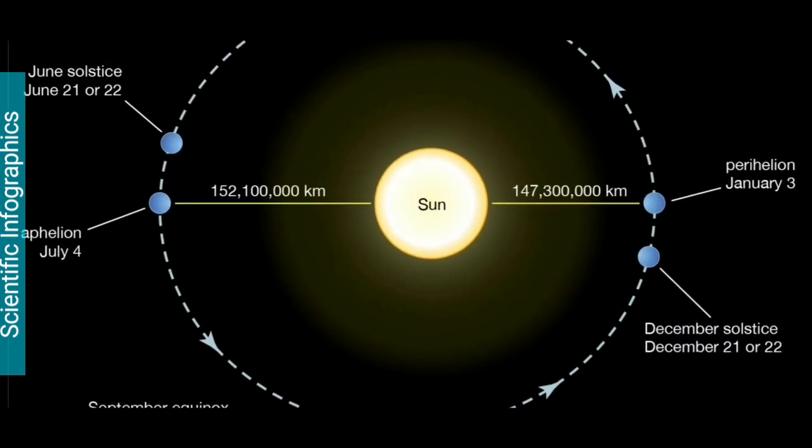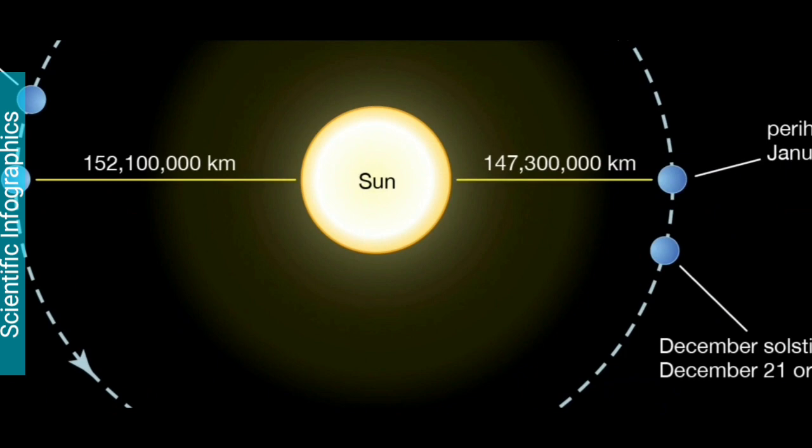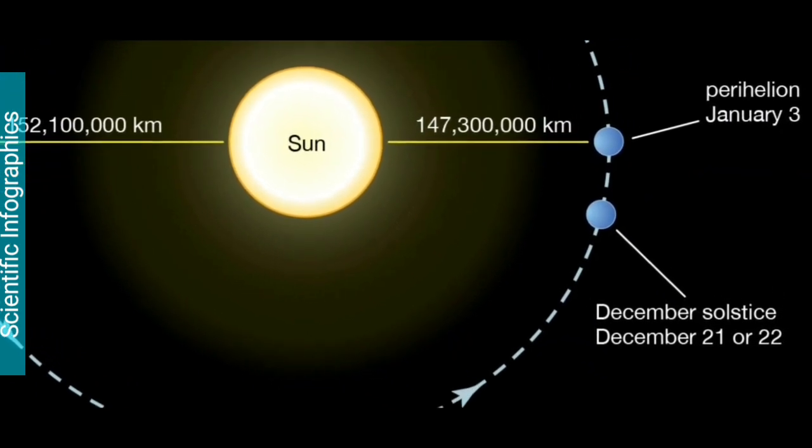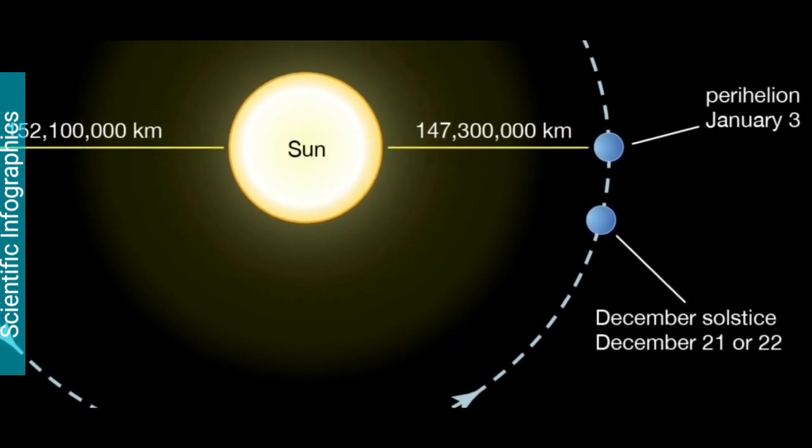The Earth is closest to the Sun, or at the perihelion, about two weeks after the December solstice, when it is winter in the Northern Hemisphere.